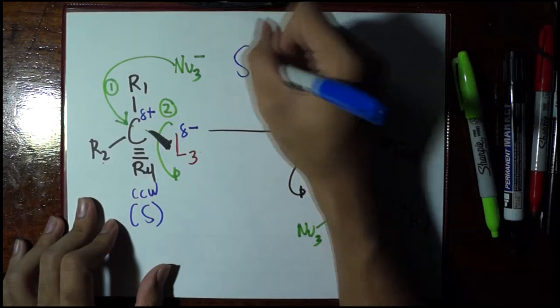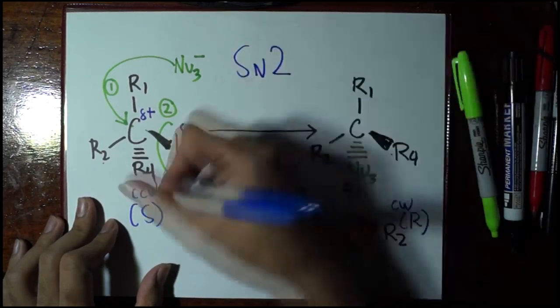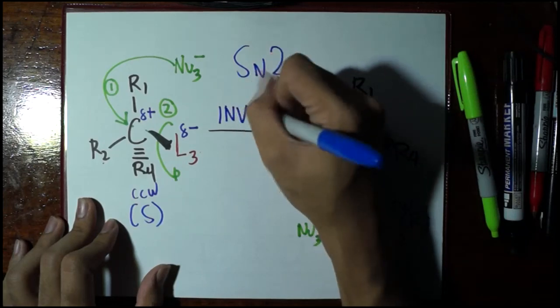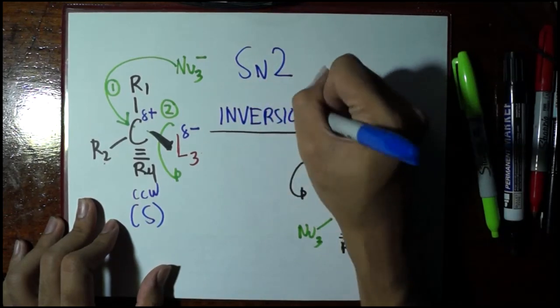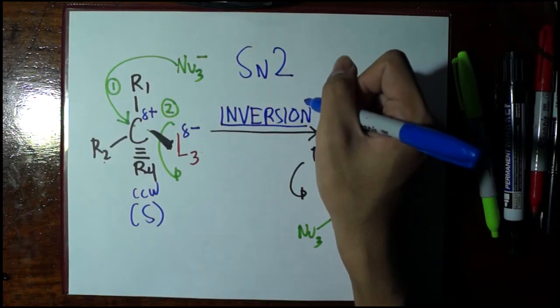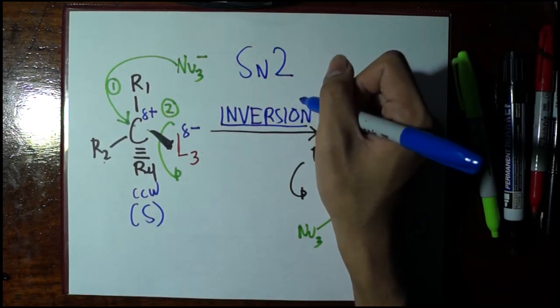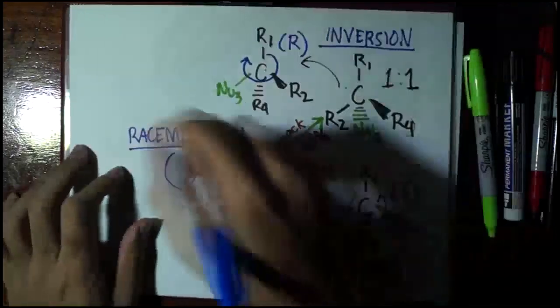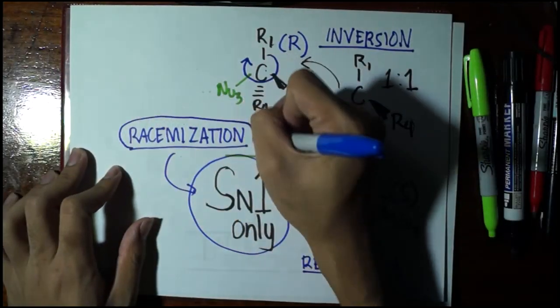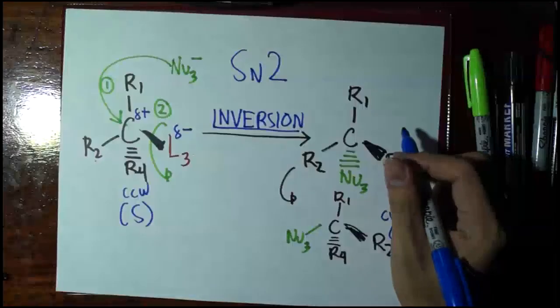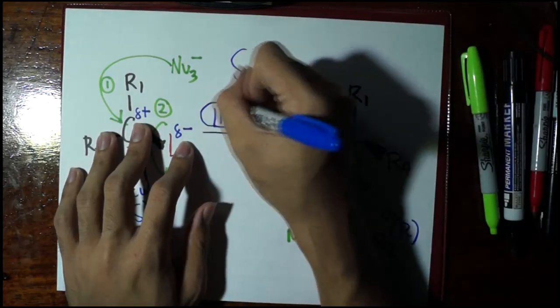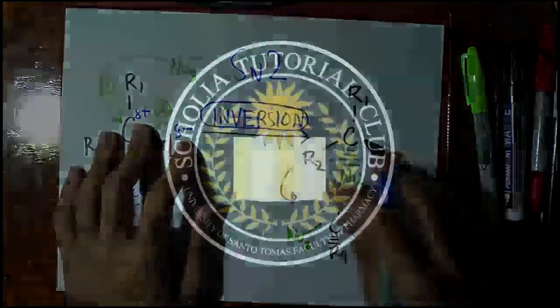This is 100% S to R or R to S that is inversion. So, meaning, we can now conclude that as long as you have an SN1 reaction, you have a racemization stereochemistry and for SN2, you will always have a 100% inversion stereochemistry.